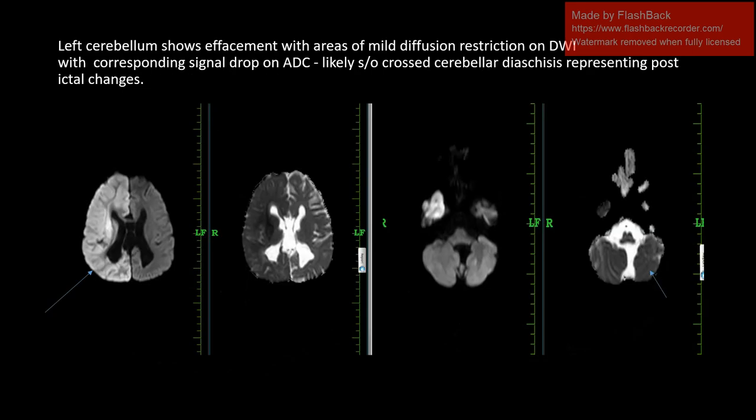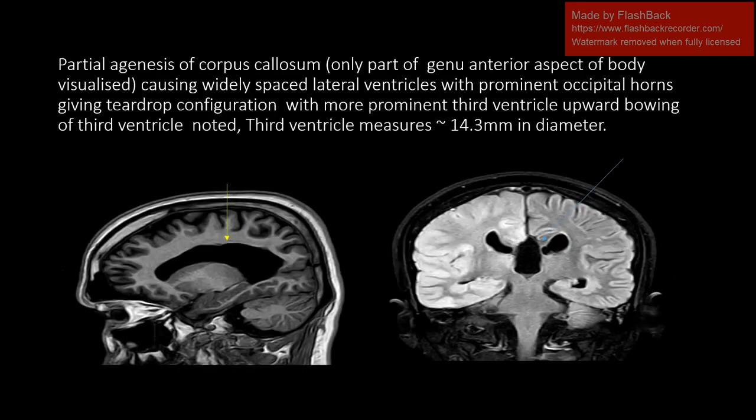We are seeing the areas of diffusion restriction. The left cerebral hemisphere shows effacement with areas of mild diffusion restriction and high signal on DWI with corresponding signal on ADC. In this case, there is partial agenesis of the corpus callosum causing malpositioned lateral ventricles with a prominent T2 configuration, and prominent posterior ventricles noted, measuring 14.3 mm in diameter.